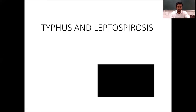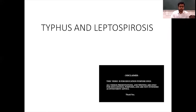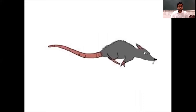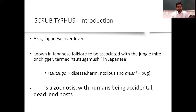Good morning. Today's topic is typhus and leptospirosis — the two most underdiagnosed diseases in India. The main culprit in both diseases is rodents. We'll discuss the following topics: introduction, historical perspective, epidemiology and Indian scenario, pathogenesis, clinical features and complications, approach to the disease, management, and prevention and control.